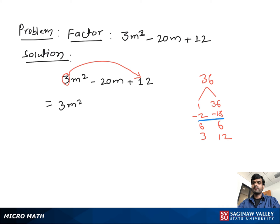We have minus 2 and minus 18. Then we write 3m square minus 2m minus 18m plus 12.